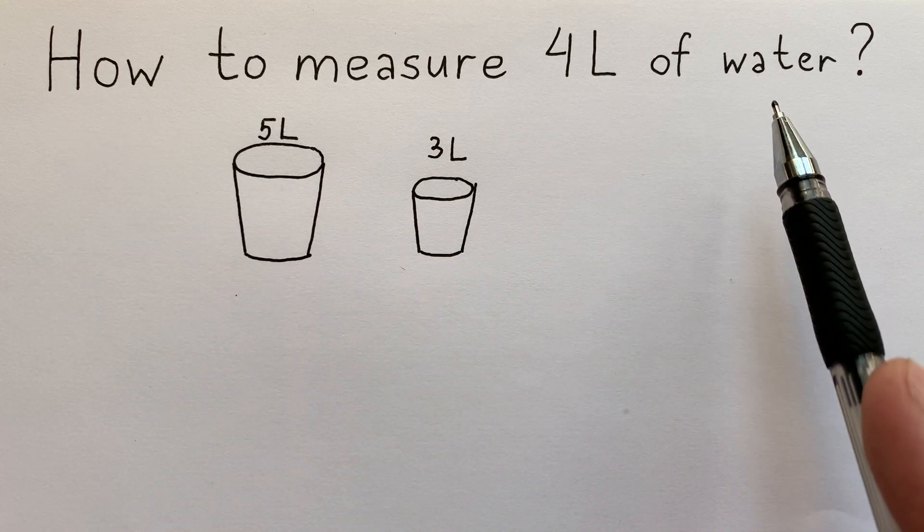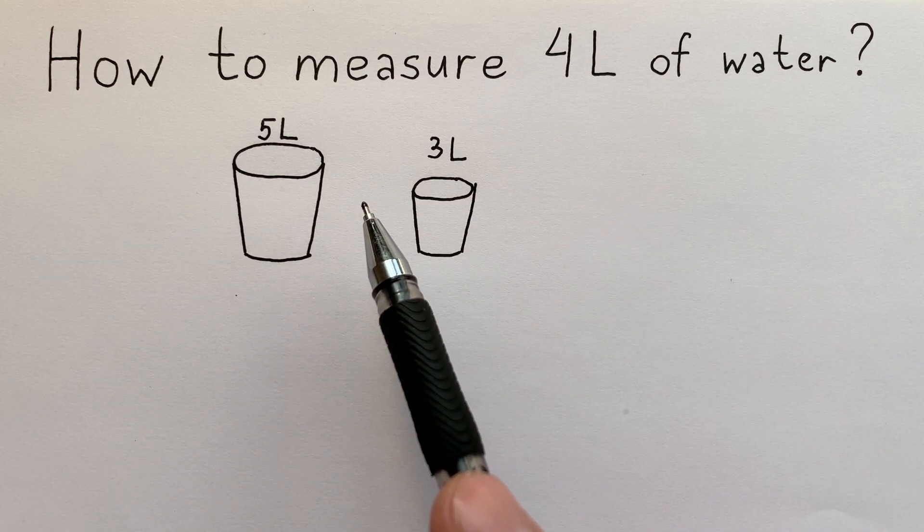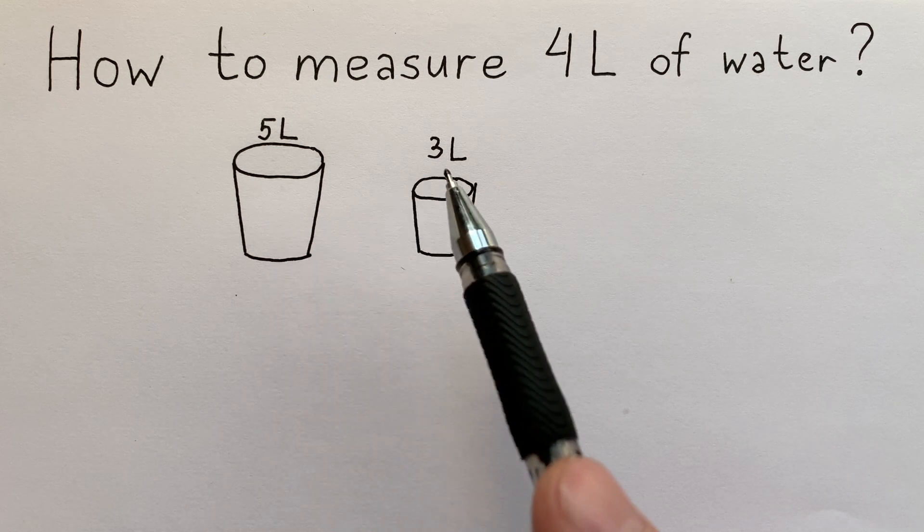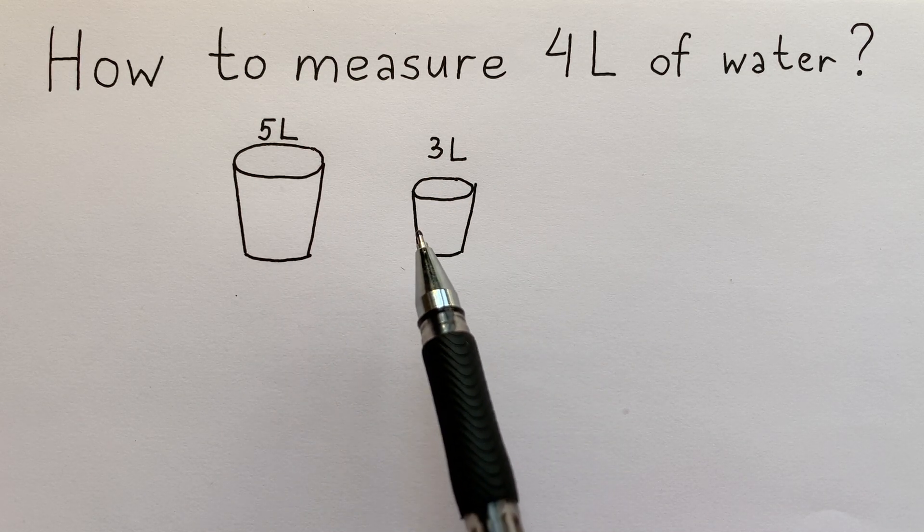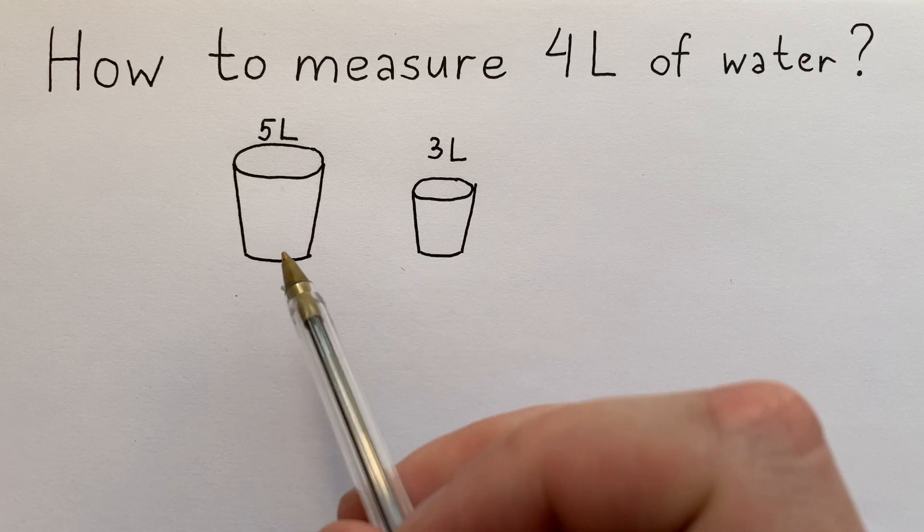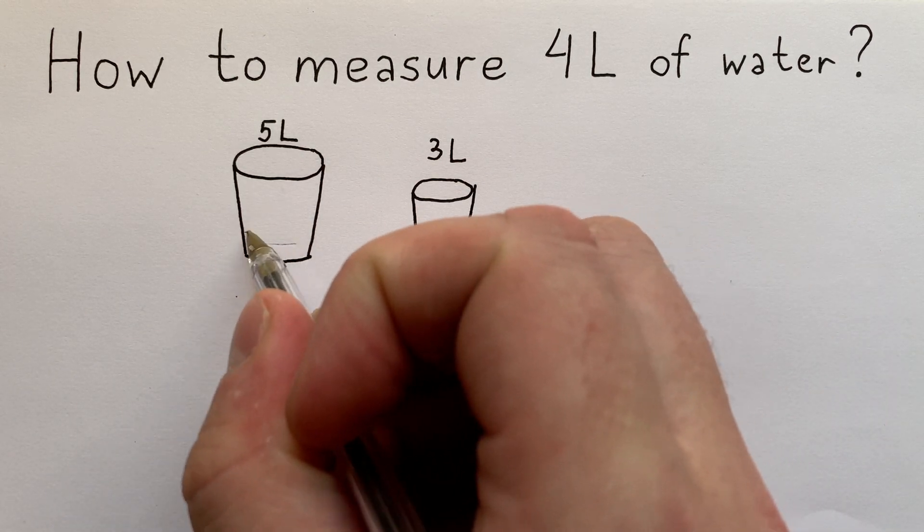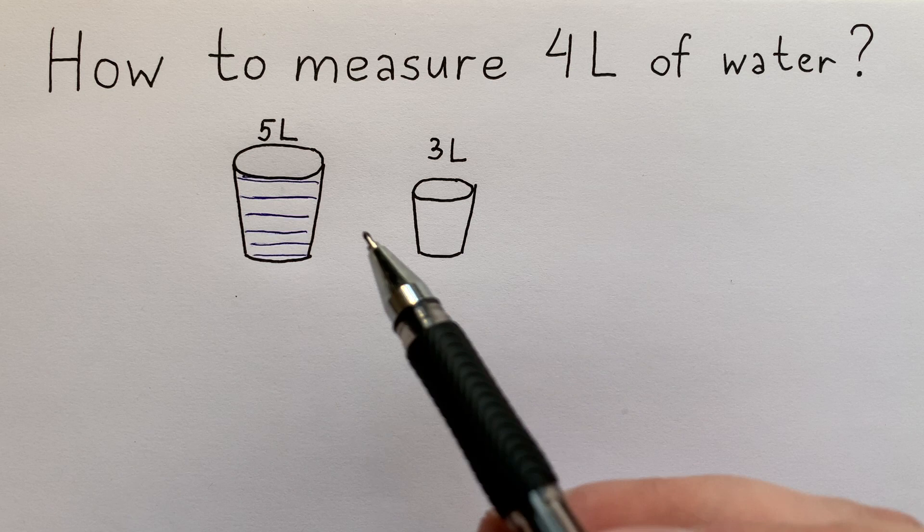How to measure four liters of water using two buckets: a five-liter bucket and a three-liter bucket? We need to get four liters of water. Let's think together. At first, we fill the five-liter bucket with water.